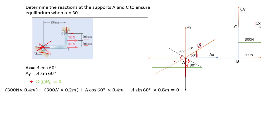Now we resolve force A in the moment equation. Ax is A cos 60°, so we replace Ax with A cos 60° times 0.4 meters — it moves in the anti-clockwise direction, giving a positive term. For Ay, which is A sin 60°, it moves in the clockwise direction to C, so it is negative: −A sin 60° times 0.8 meters, since the distance from A to C is 0.8 meters.